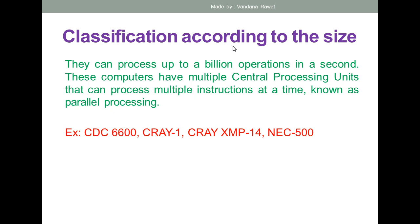A supercomputer can process up to billions of operations within a second. This is possible because these computers have multiple central processing units, which is why the speed is very fast. Examples of supercomputers include CDC 6600, Cray 1, Cray XMP 14, and NEC 500.